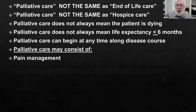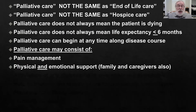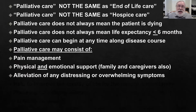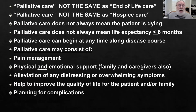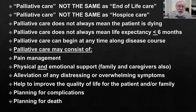Palliative care may consist of pain management, physical and emotional support — not only of the patient, but of the patient's family or caregivers. It can be the alleviation of any distressing or overwhelming symptoms, and may include improving the quality of life of the patient and their family. Planning for complications associated with the underlying illness, and yes, it can include planning for death in certain cases.